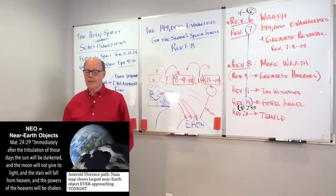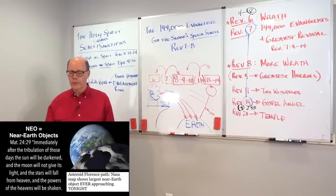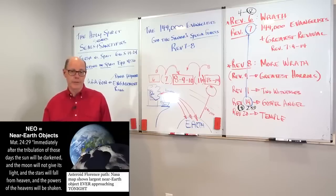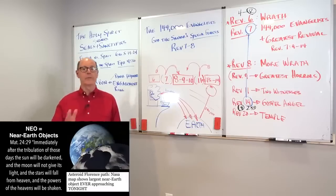On the right side of that slide, asteroid Florence. NASA map shows the largest near-earth object ever approaching tonight. Now that was last year.